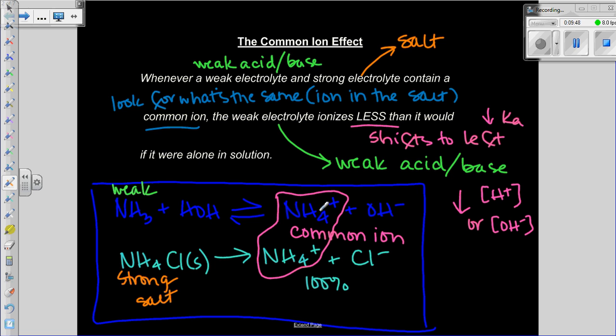Contain a common ion. My common ion is the ammonium. The weak electrolyte, that means my ammonia, ionizes less. So that means I have less of these two ions.